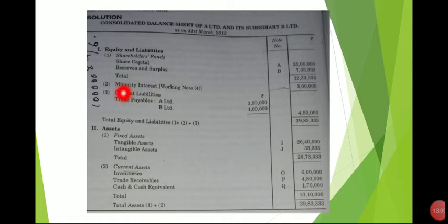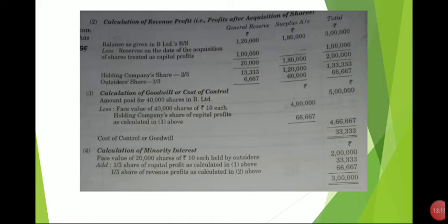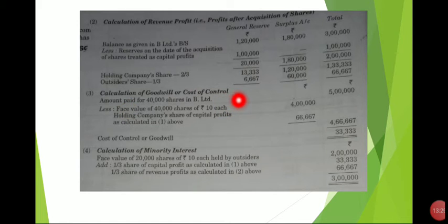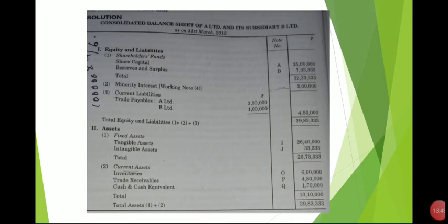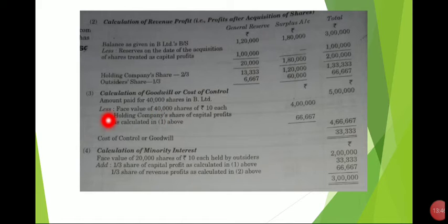That's what we call the minority interest. What is minority interest? How do we calculate the minority interest? That leads to the calculation of goodwill or cost of control. Working note: Calculation of Goodwill or Cost of Control. Amount paid for shares: Rs. 40,000. The amount paid is Rs. 40,000.